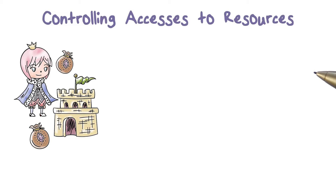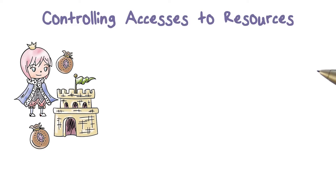We're going to talk about how we control access to resources. These are protected resources. Any program can make a request for such a resource, and we need to decide if a request should be allowed to go ahead — it should be granted — or we have to deny it.